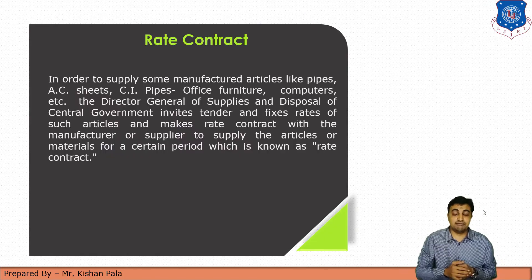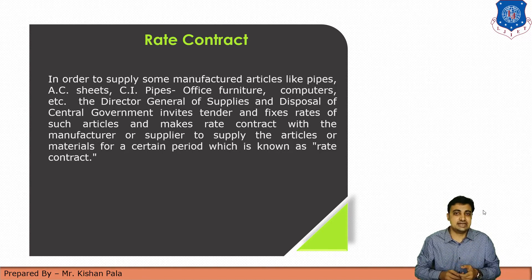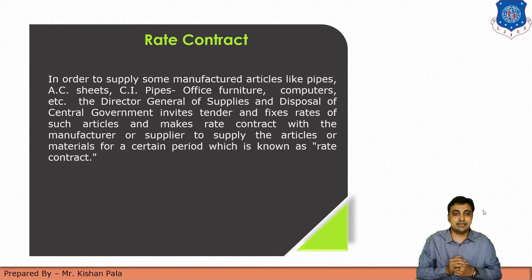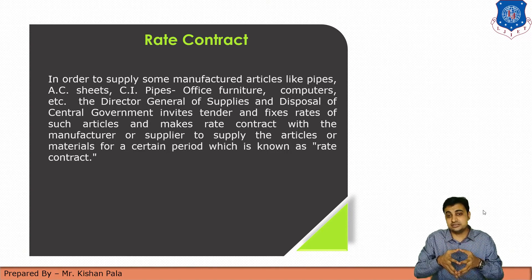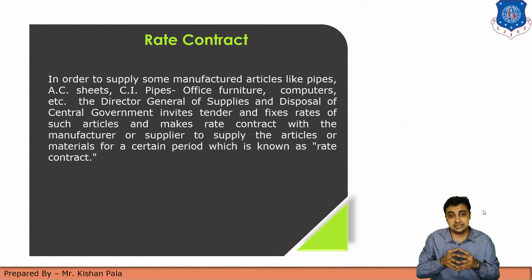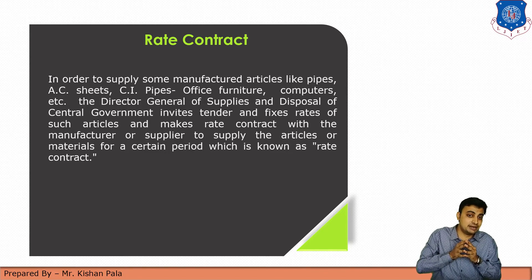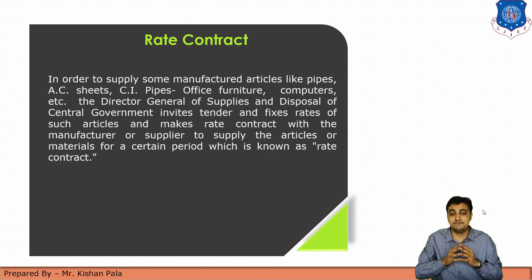The fourth type is the rate contract. In order to supply manufactured articles such as pipes, AC sheets, cast iron pipes, office furniture, computers, and more, the Director-General of Supplies and Disposal of the Central Government invites tenders, fixes rates for such articles, and makes a rate contract with the manufacturer or supplier to supply materials for a certain period.